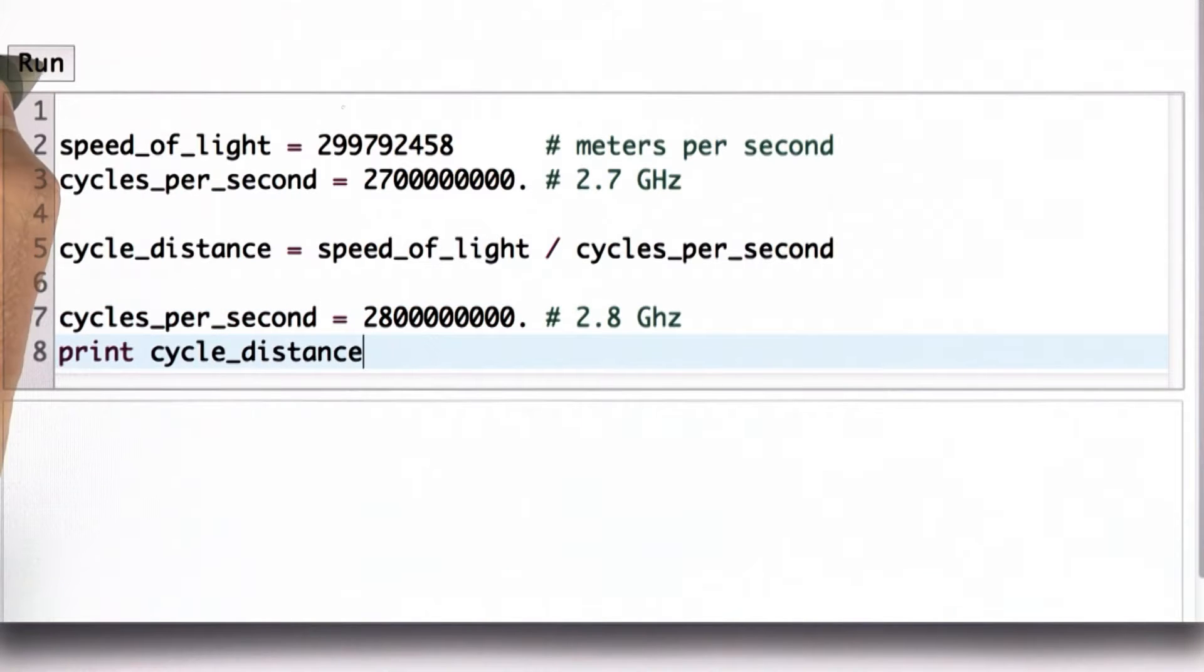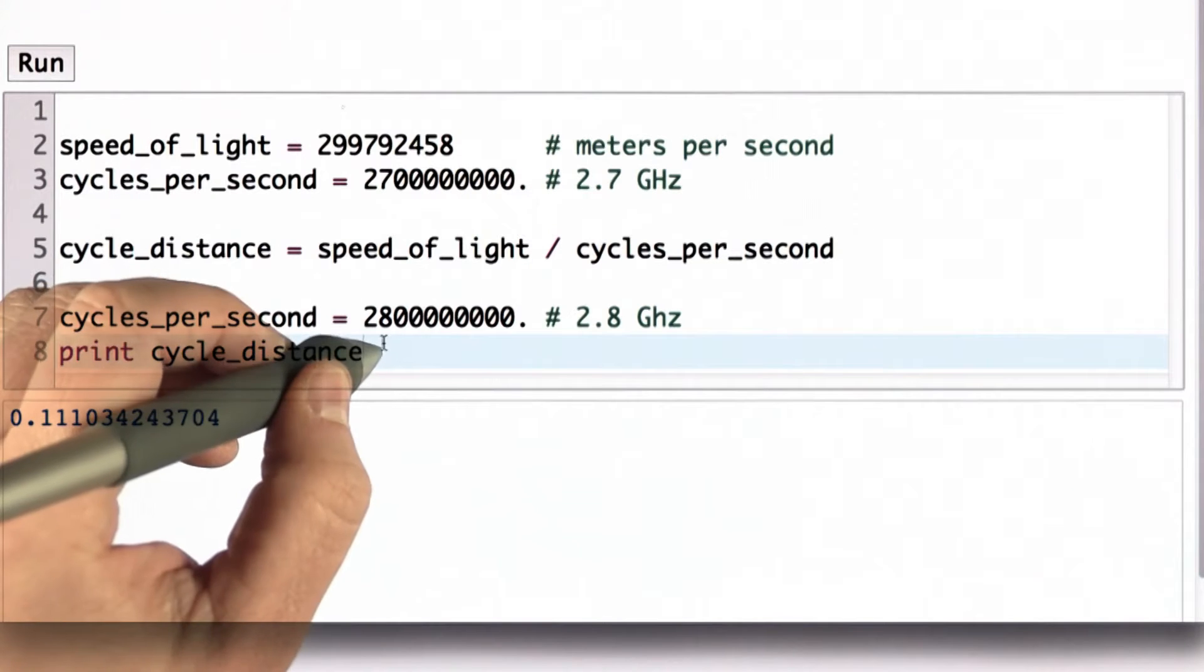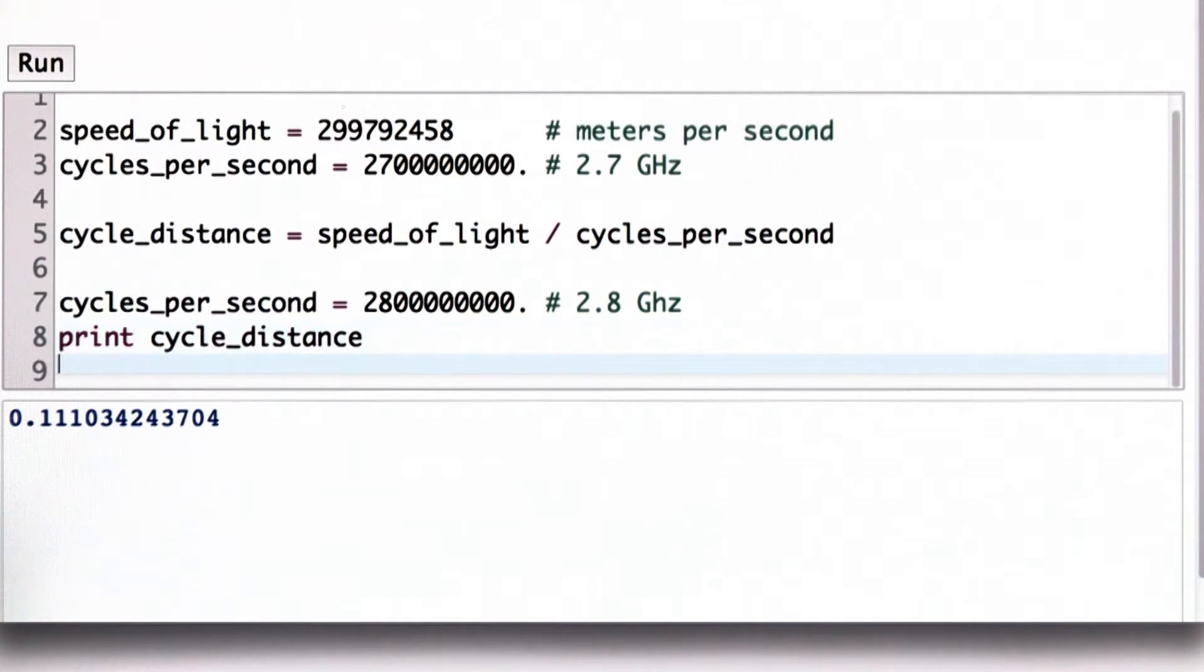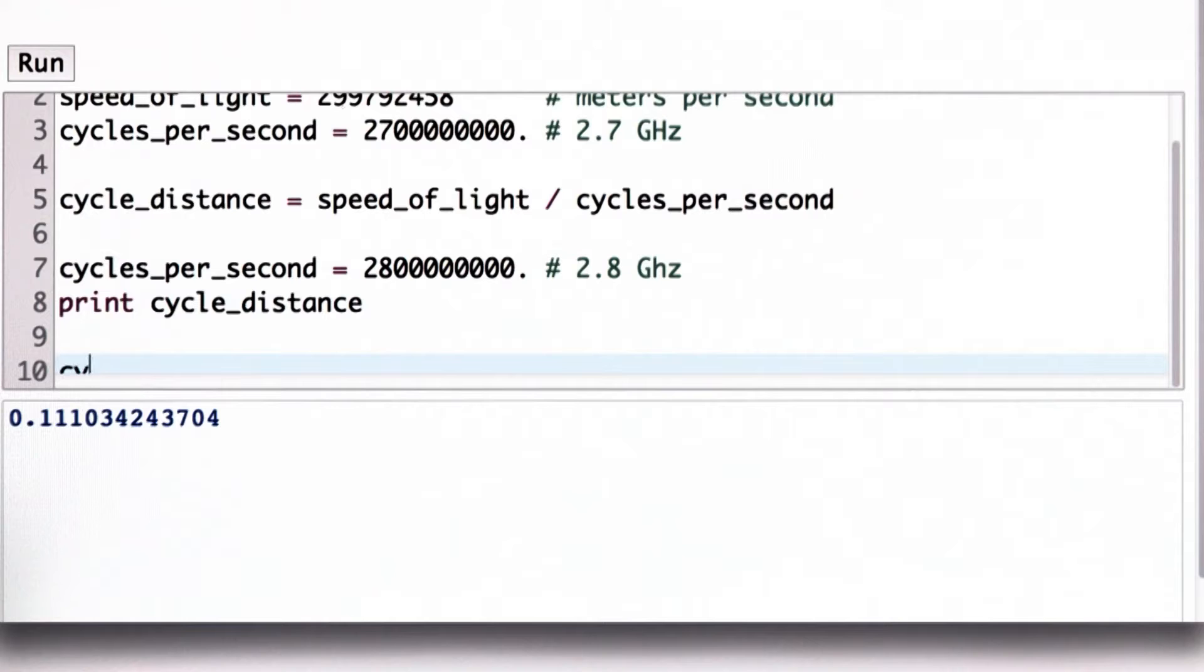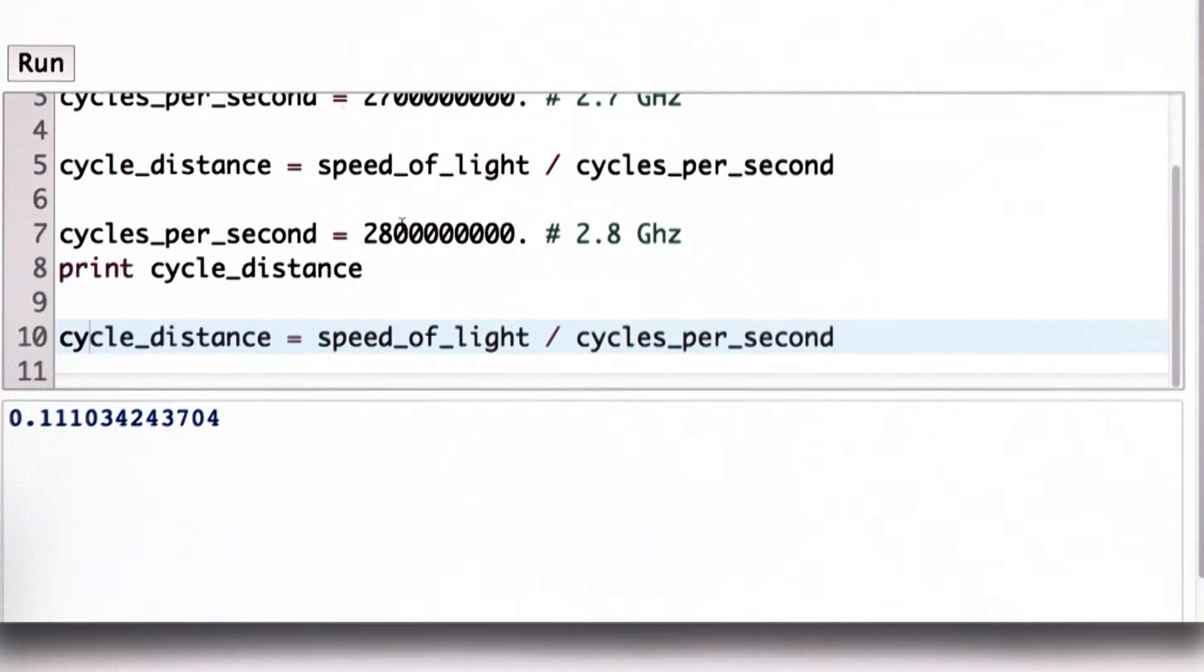Now, that doesn't affect the value of cycle_distance. This was already computed with the old cycles_per_second. We still get the result 0.111. We'll compute it again. This time, the value of cycles_per_second is the new value, since we changed what cycles_per_second refers to.